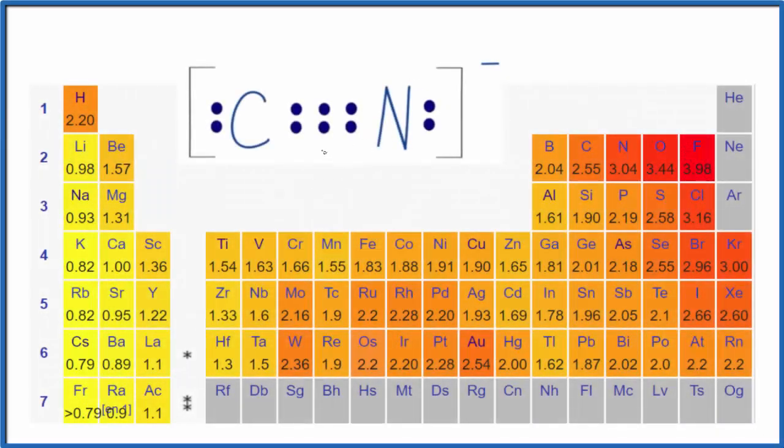The question is whether the cyanide ion, this CN⁻, is polar or nonpolar. And it's a little bit confusing because the cyanide ion, it's an ion, it has a negative charge. So let's talk about the polarity of CN⁻.